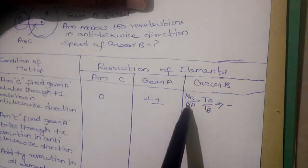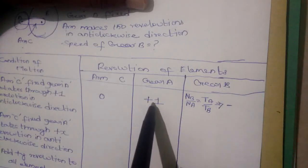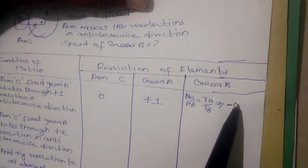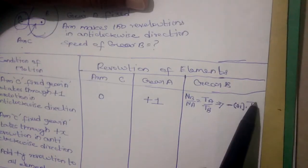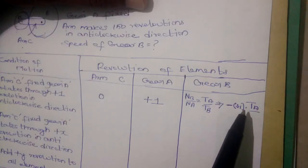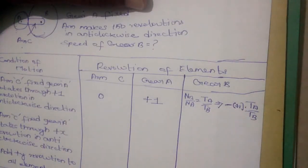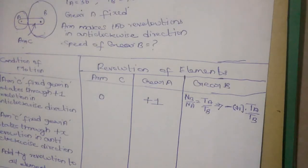Substituting the value of NA plus 1 gives plus 1 into TA by TB. Negation is introduced since Gear B rotates in the clockwise direction.